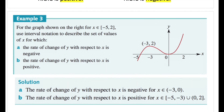For the graph shown, where x is an element of [−5, 2], use interval notation to describe the set of x-values for which the rate of change of y with respect to x is negative. The minimum x-value is −5 and the maximum is 2. The point (−3, 2) is our maximum turning point, and at the origin we have our minimum turning point. For part a, negative rate of change means spidey is sliding down — this happens from x = −3 to x = 0.